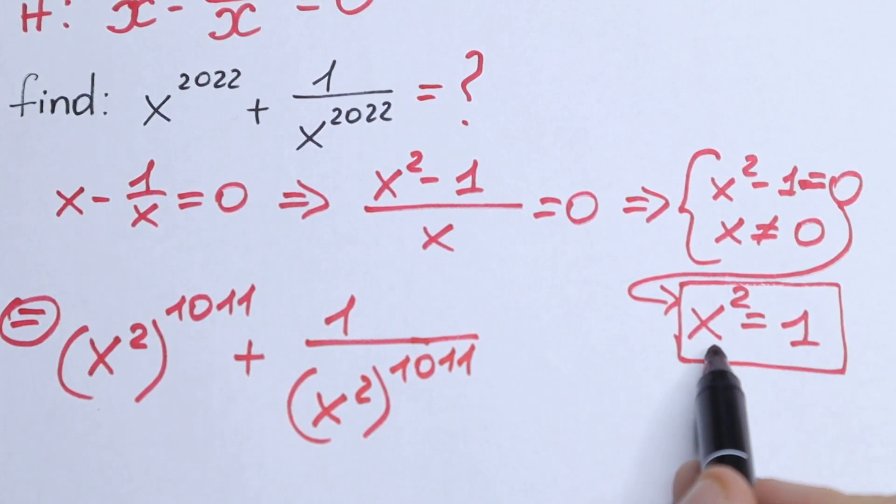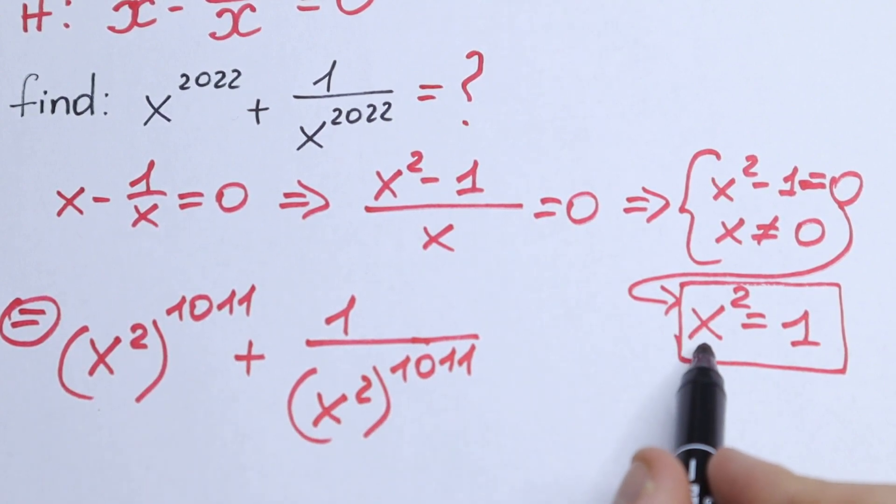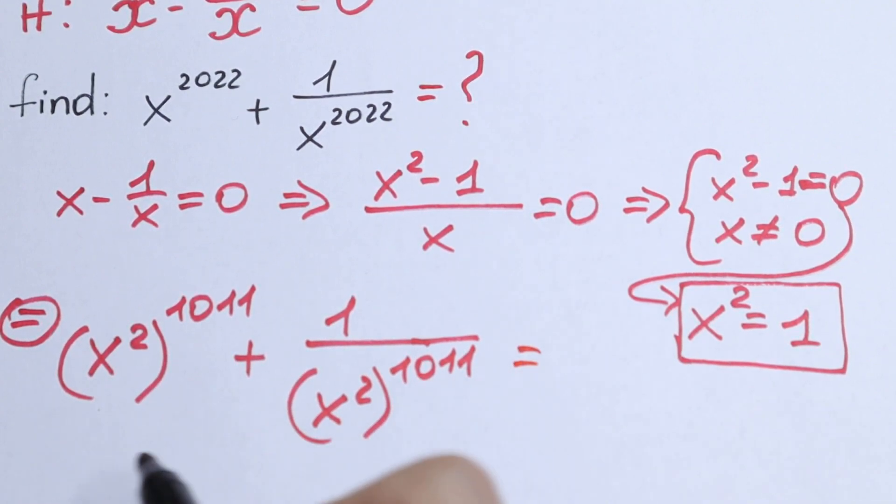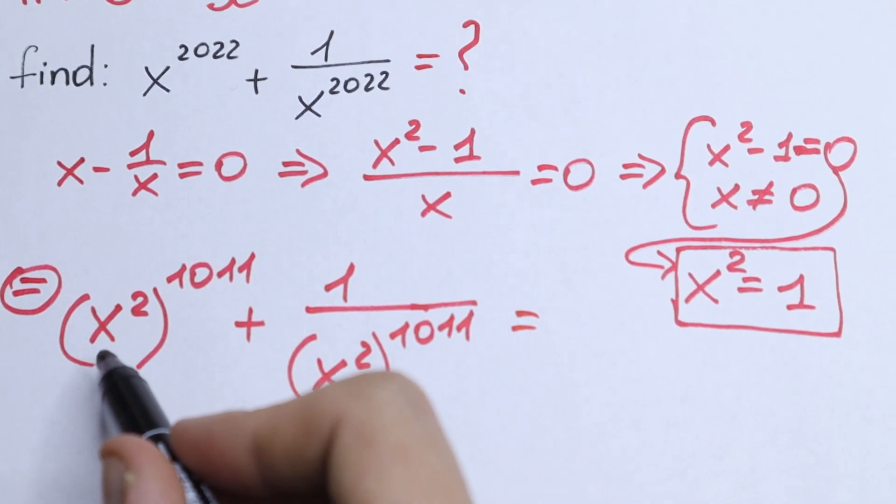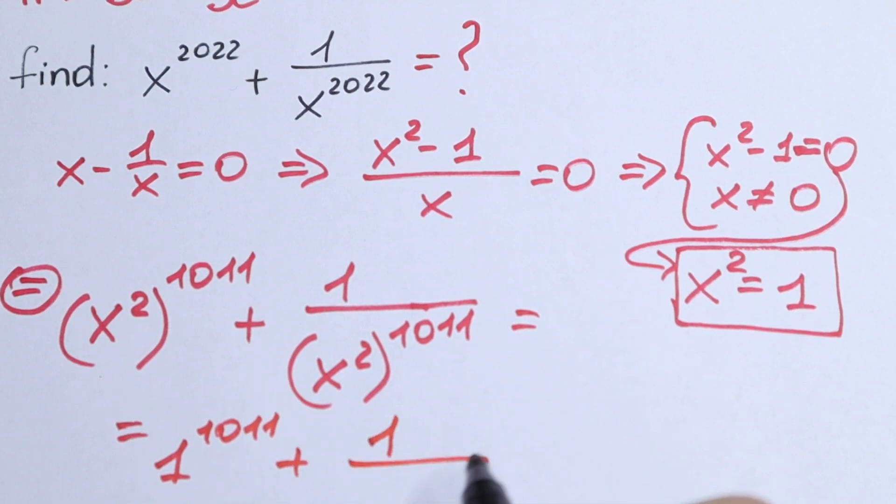But we know that x squared equal to 1. And if x squared equal to 1, we can plug in this element right here. And as a result, we will have 1 to the power 1011 plus 1 over 1 to the power 1011.